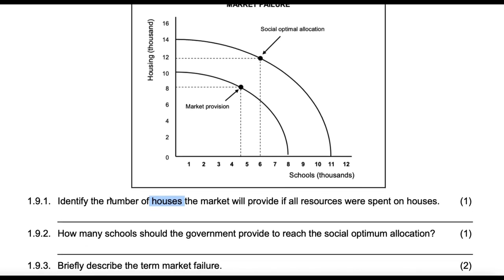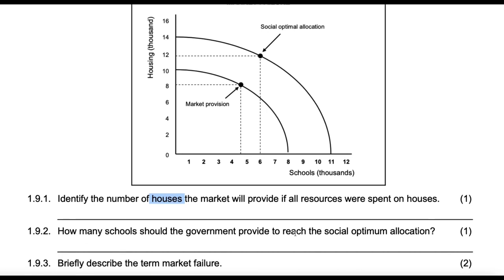Then: how many schools should the government produce to reach social optimum? They're asking about schools, so the answer is 6,000 schools. This one was made a bit too obvious in the question wording. It's 6,000.